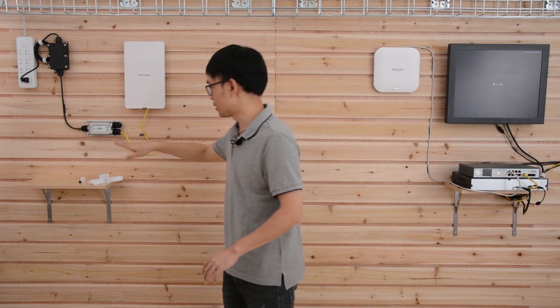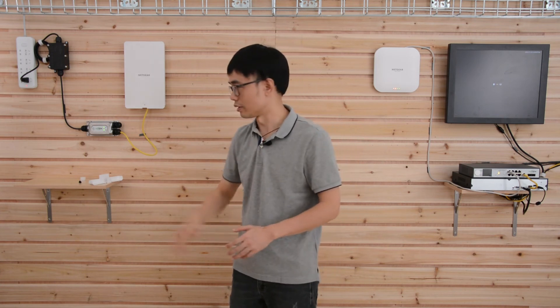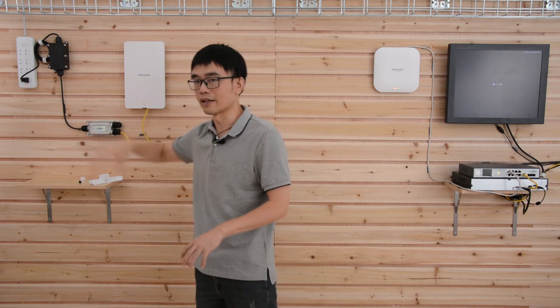And the distance, the maximum distance from this PoE injector to the Netgear access point is about 300 feet. So it could be quite far. As long as you find the AC outlet around the Plaza, it will be fine.